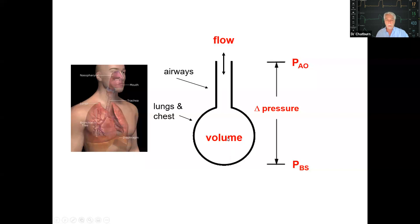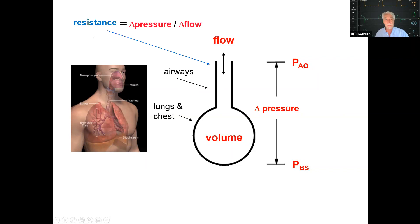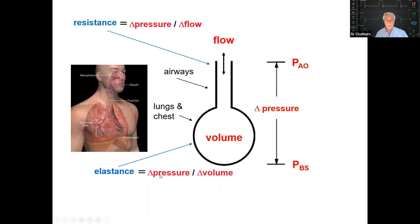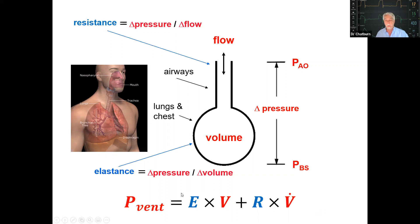From these variables we can define resistance as a relationship of pressure and flow, and elastance as a relationship of pressure and volume change — with compliance being the reciprocal. All of this is summarized in the equation of motion for the respiratory system: pressure as a function of time equals elastance E times volume plus resistance R times flow, where flow (V-dot) is the derivative of volume with respect to time. This is a first-order linear differential equation.